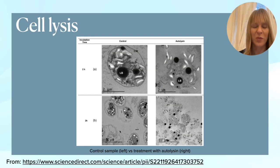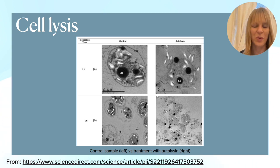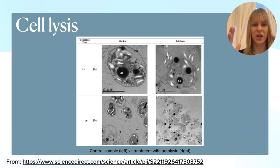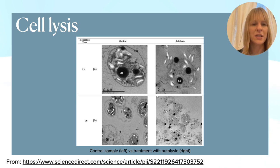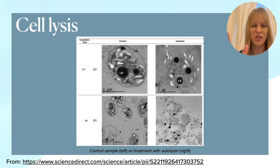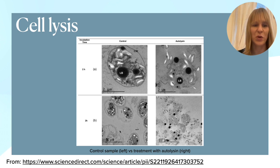Here you can get an idea of how the cell wall disruption looks. There is a control sample on the left where the cell is nicely intact. When treated with autolysine on the right, you can see the cell walls burst open — that was after just two hours, so it's relatively fast. Some of the lipids were still sticking to the cells, which is why the solvent was needed to dissolve them afterwards. This illustrates why you often see a combination of different methods to make the process more effective.